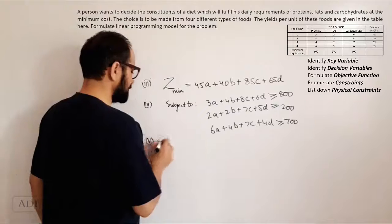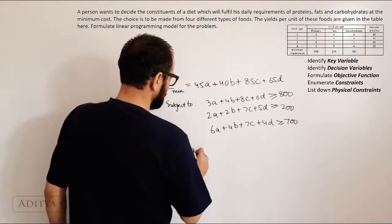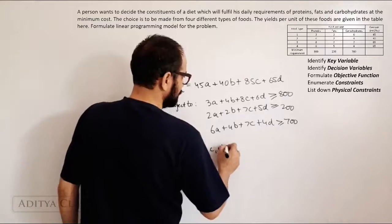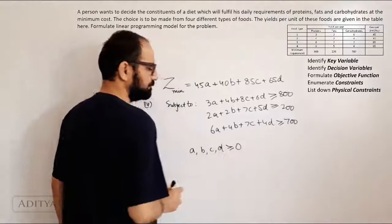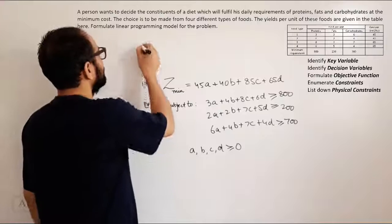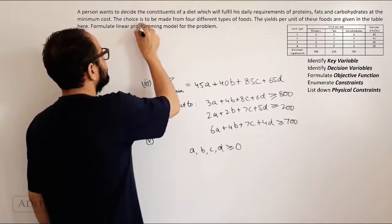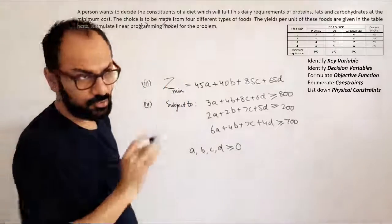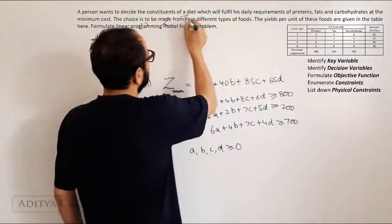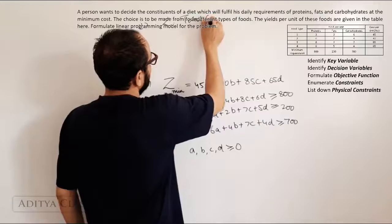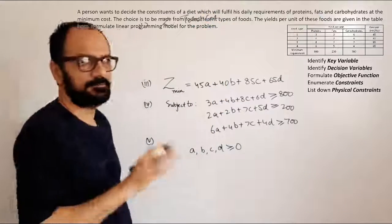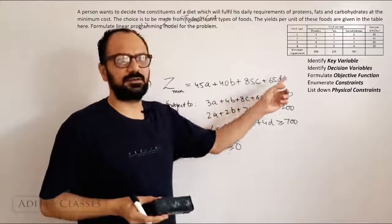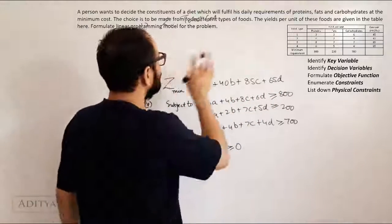What is our fifth step? Fifth step is physical constraints, A, B, C and D should be more than or equal to 0. What is our first step? Declaration of Z. What is Z? Z is total cost. Total cost of different foods. First type of food, second type of food, third type of food and fourth type of food. So, that is total cost.